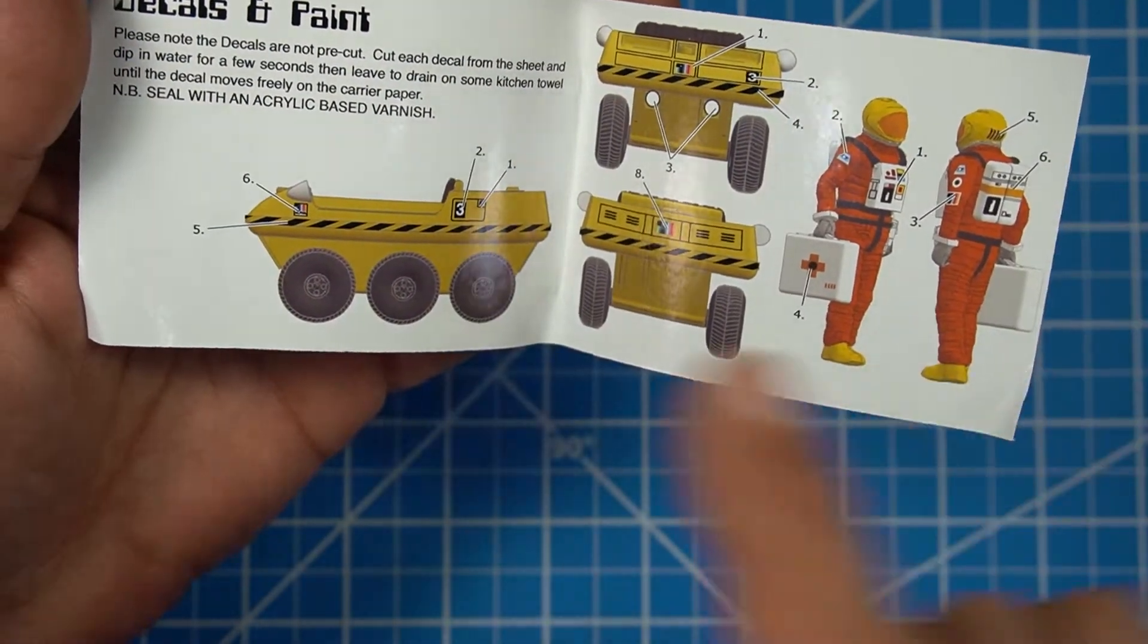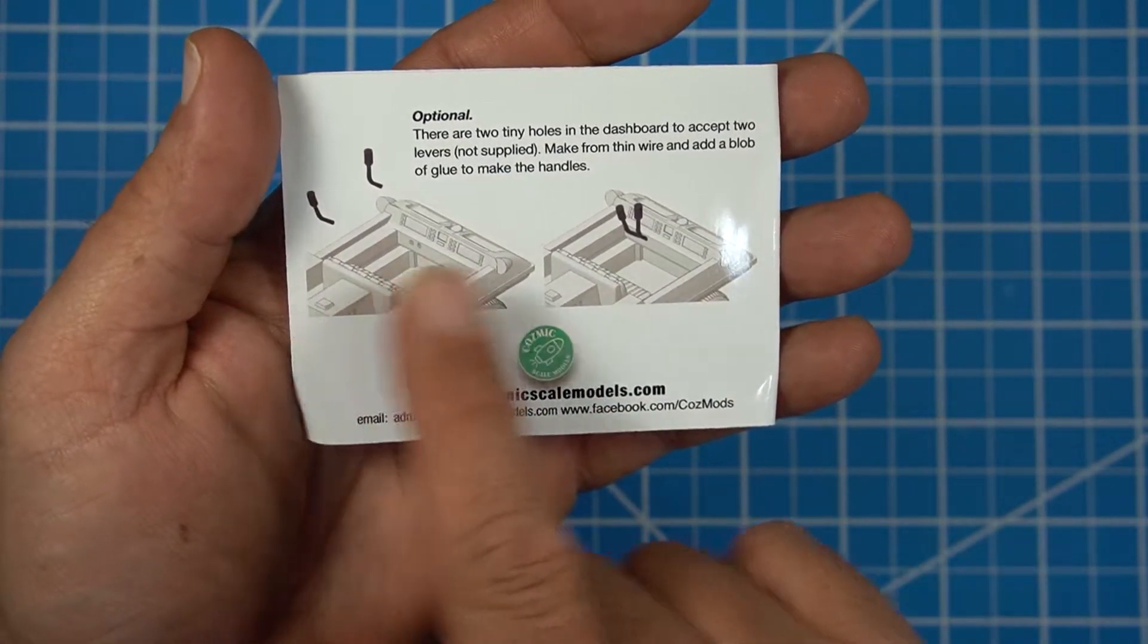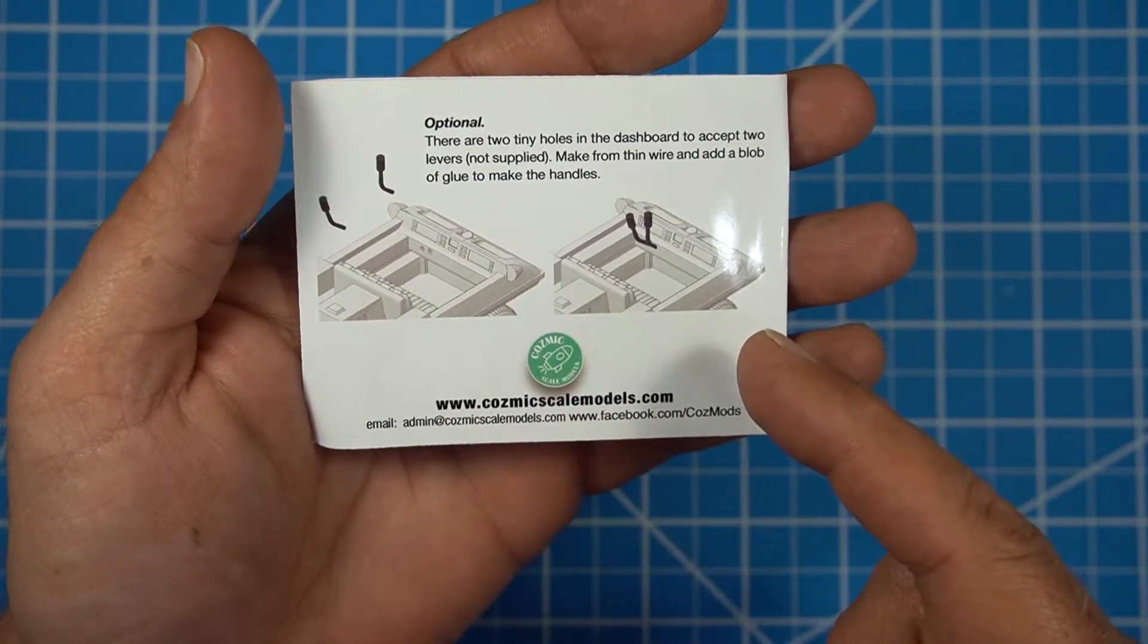On the inside is decal placement and it tells you what to do with the decals. And on the back it shows you the levers and you have two optional ways to do those levers.